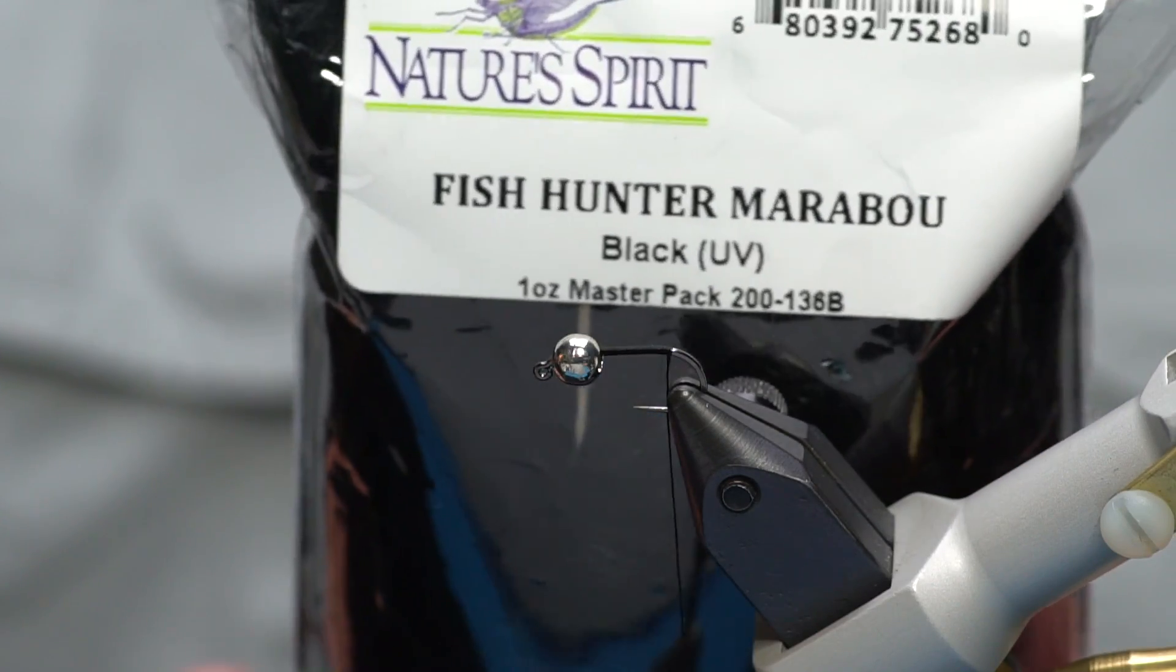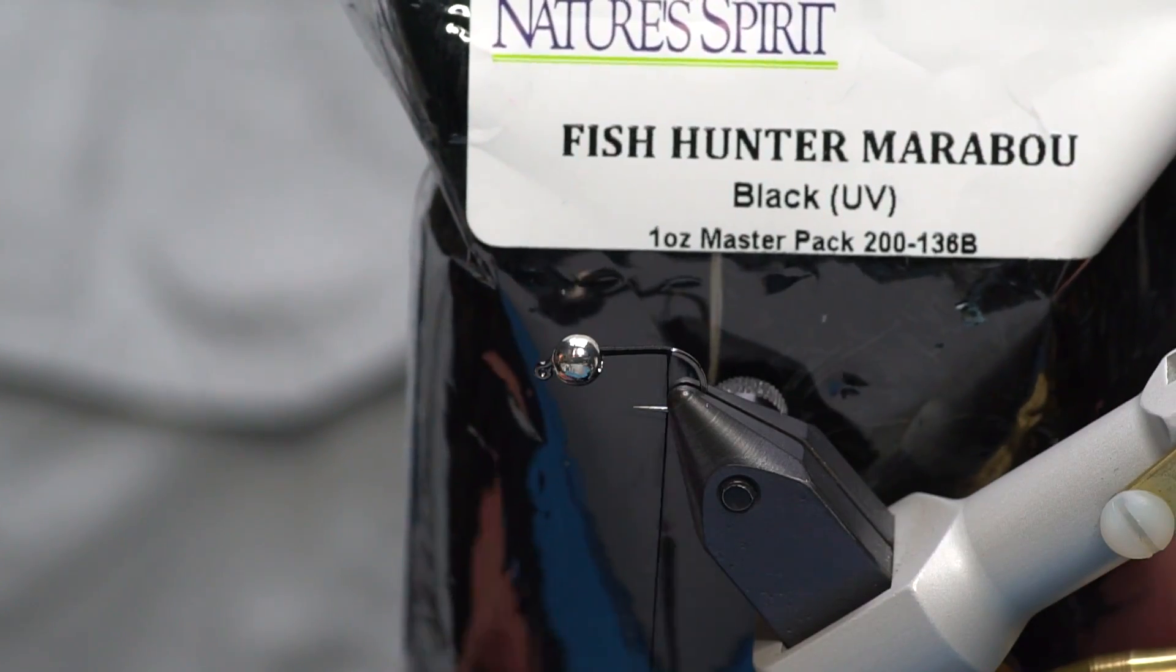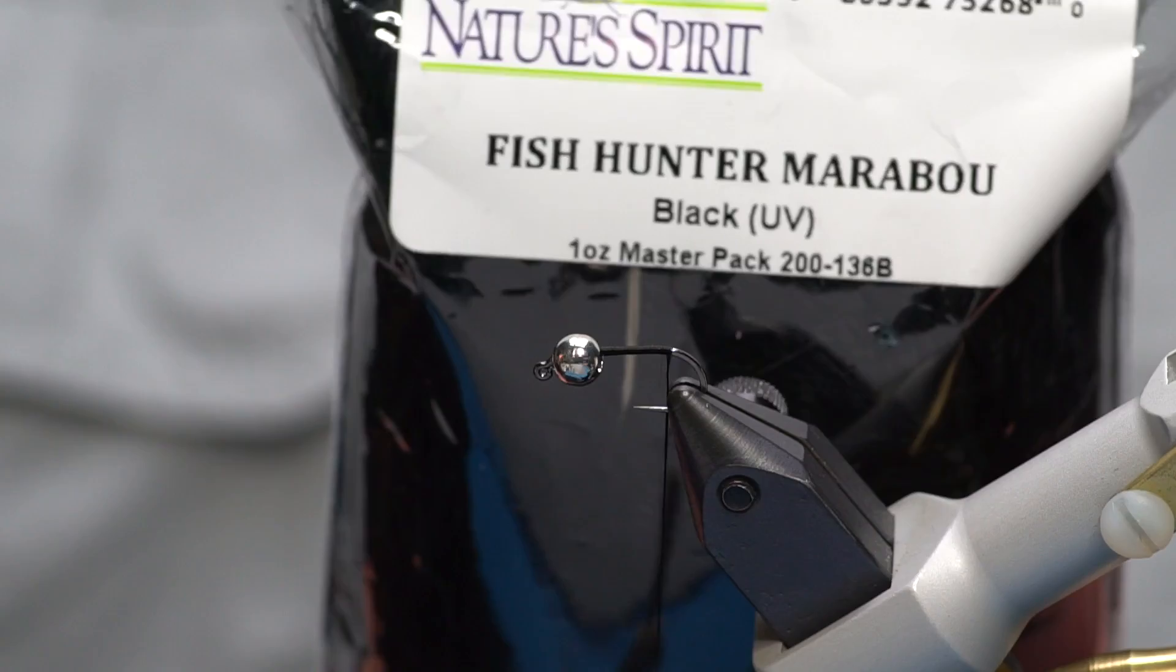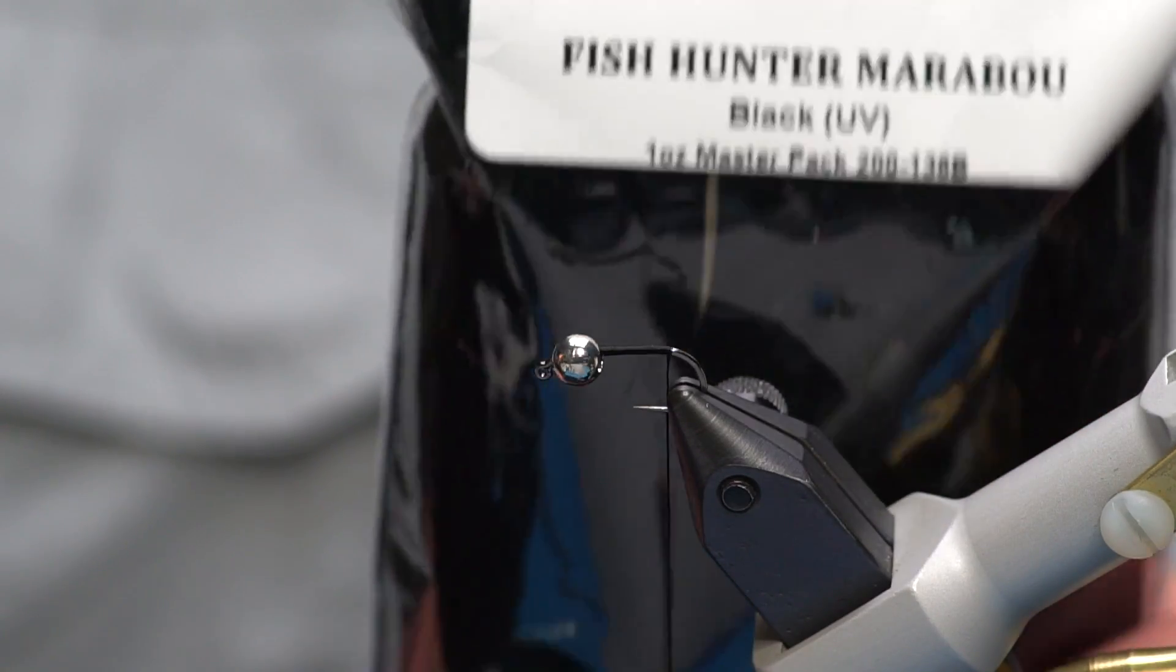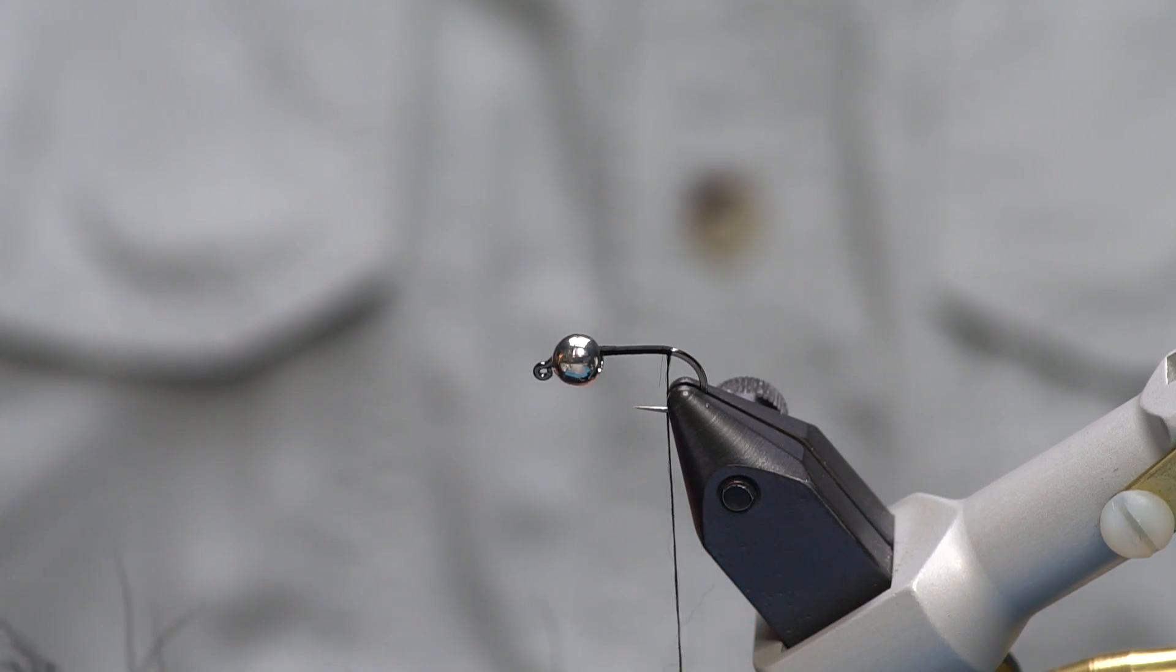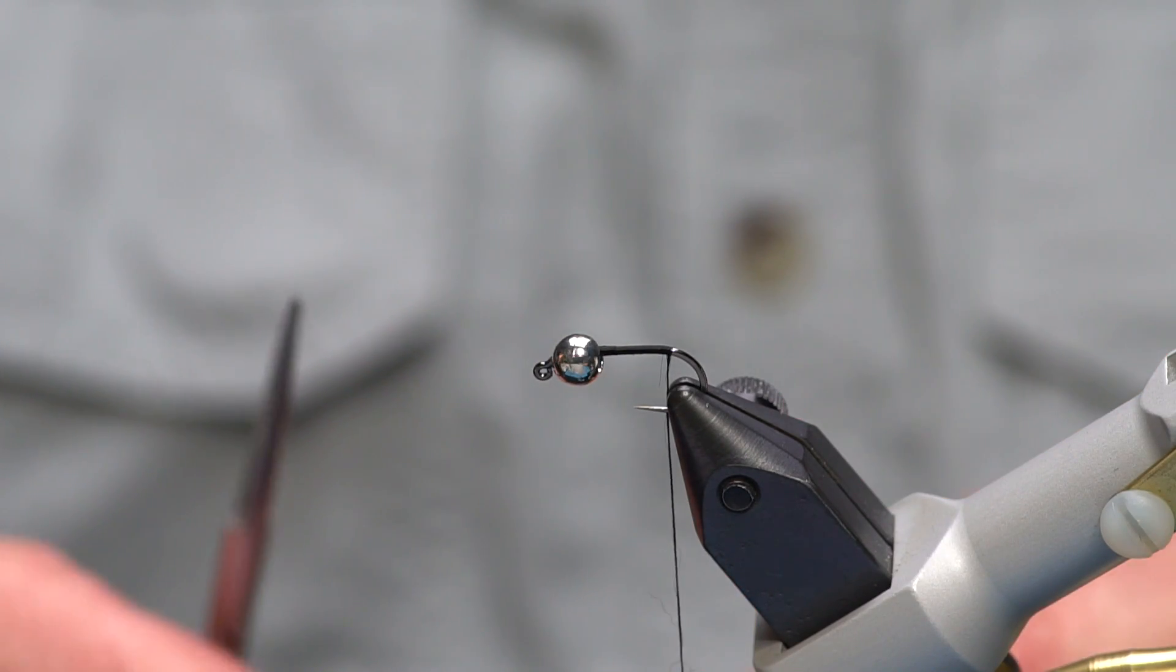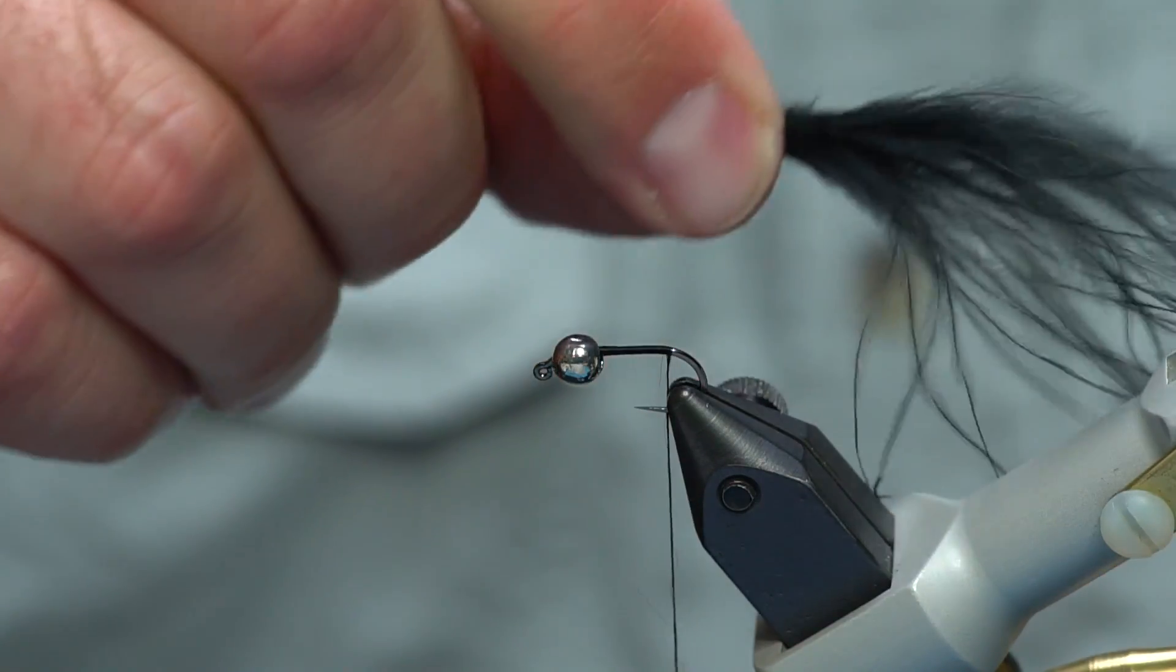I don't know if this black UV actually has any real UV properties to it. When I shine a UV light on it I can't see any but I have a lot of confidence in other products that have UV so I figure if there's any hint of UV in there that the fish are picking up this can't hurt. So black UV marabou for the tail. We're going to tie this tail fairly long just like we would on most streamers, especially for lakes where we tie them quite long.